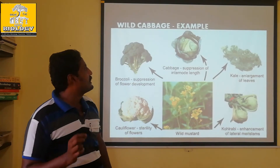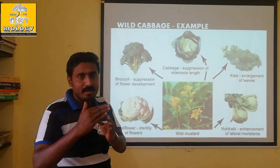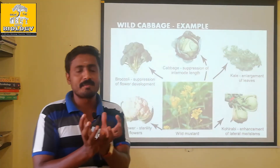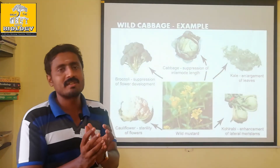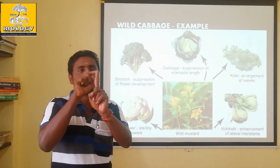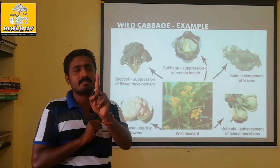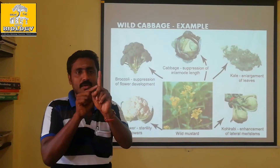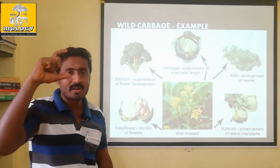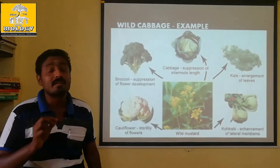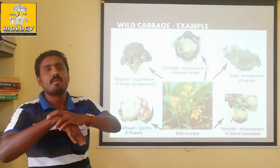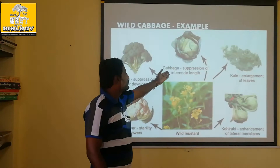The concept here involves the suppression of internode length. Internode length is the gap between nodes on a stem — the space between where leaves attach. There is a node, and between two nodes there is an internode. The internode is shorter than the length of a leaf.